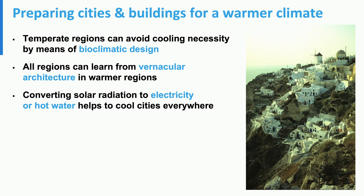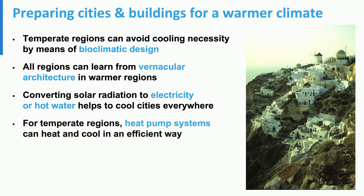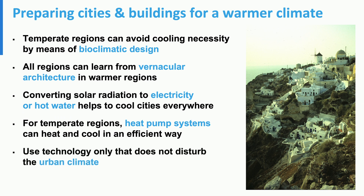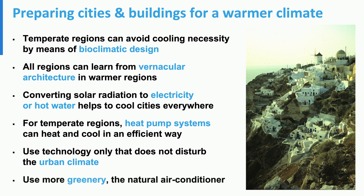Cities can also be cooled by converting solar radiation, which otherwise would become heat, into electricity and hot water. For many regions in the world that require heating in winter and cooling in summer, heat pumps seem to be a logical solution — they can both heat and cool. As well as air conditioners, air-to-air heat pumps release heat in the cooling mode, so they contribute to the urban heat island effect. We should be mindful to use technology only that does not disturb the urban climate. Finally, greenery can be a very effective means to reduce undesired heat in cities. Plants provide shading, retain rainwater, and cool the air by evapotranspiration — natural air conditioners they are.